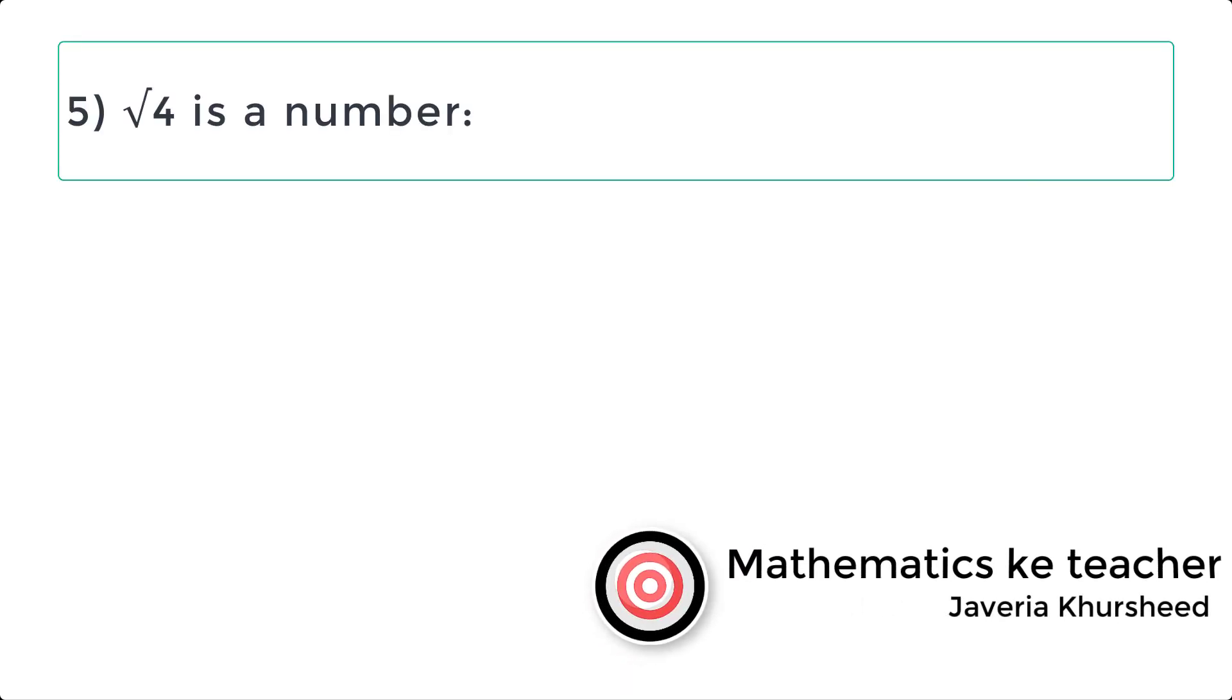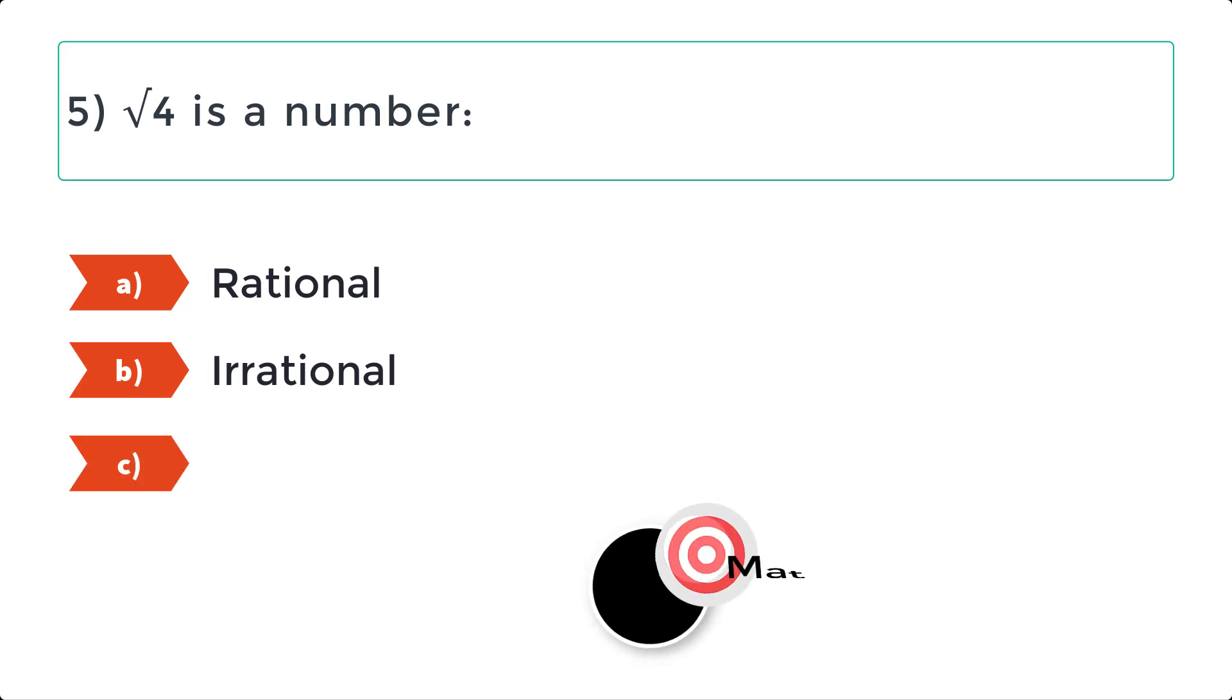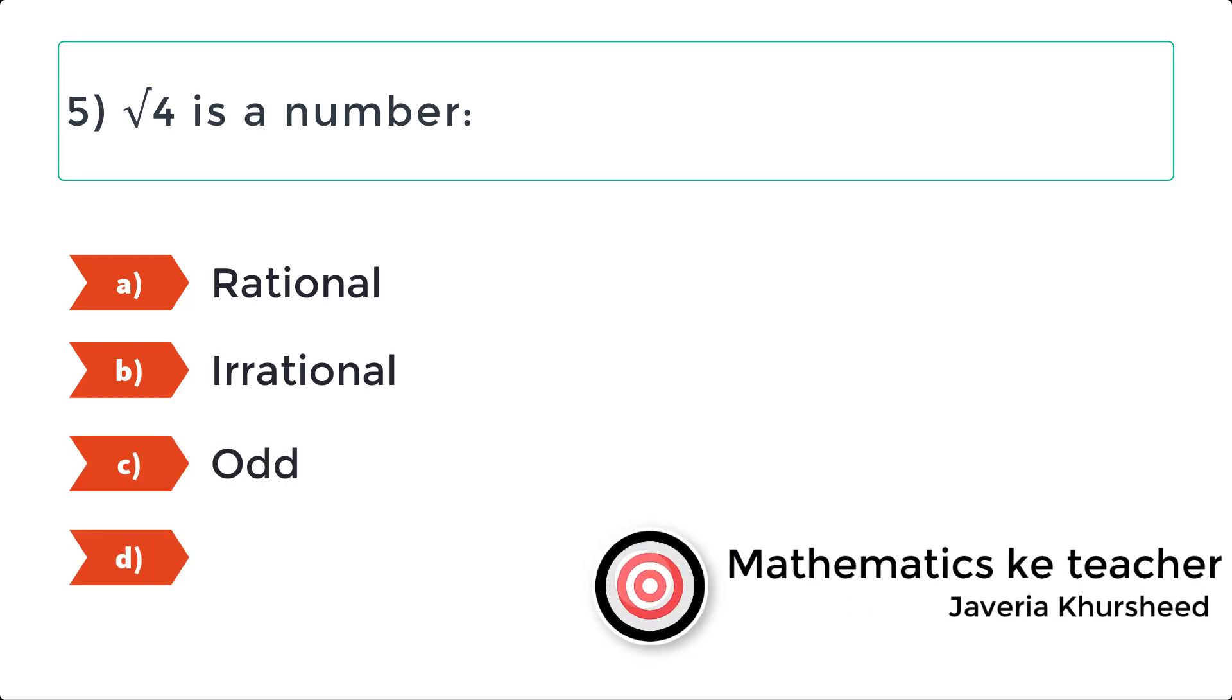5. Square root 4 is a number. A. Rational. B. Irrational. C. Odd. D. None of these.